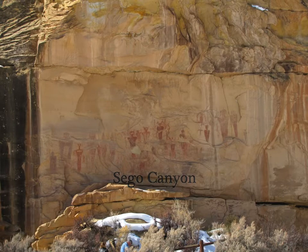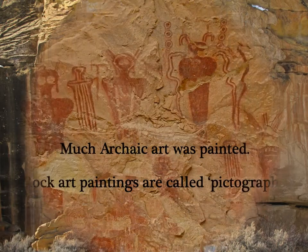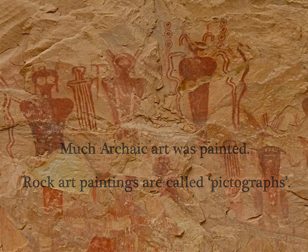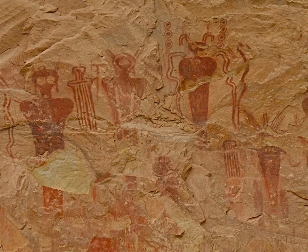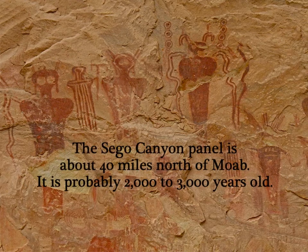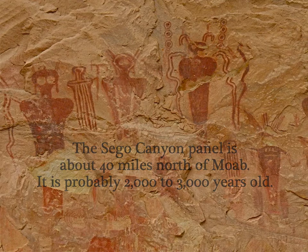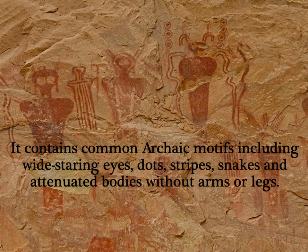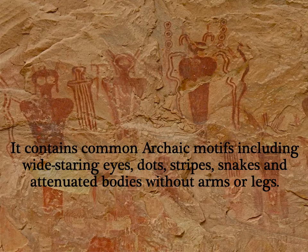Sago Canyon has all four of those cultures, including the archaic culture. Much of the archaic art that exists today was painted — rock art paintings are called pictographs. The Sago Canyon panel is about 40 miles north of Moab and is probably two to three thousand years old. It contains common archaic motifs, including wide staring eyes, dots, stripes, snakes, and attenuated bodies without arms or legs.